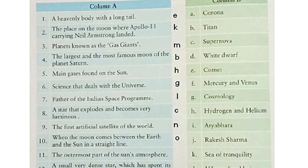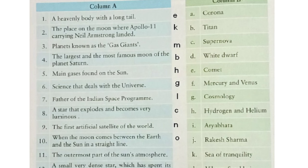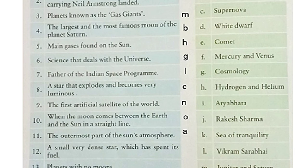Now let's read out point number 11: the outermost part of the sun's atmosphere. The answer is Corona, given in point number A. I know nowadays we are all very familiar with this name, but here the outermost part of the sun's atmosphere is called Corona. So, write A here. Now let's read out number 12: a small, very dense star which has spent its fuel. It is called White Dwarf and the answer is given in point D. Please write D here.